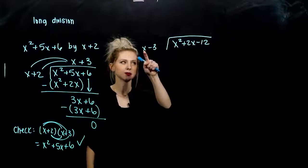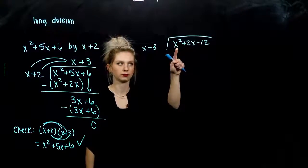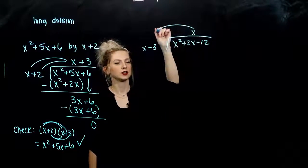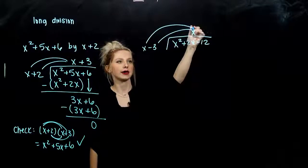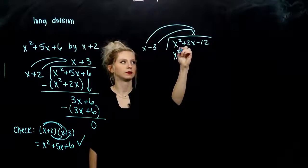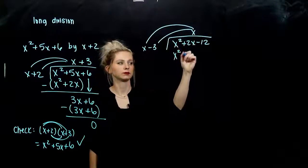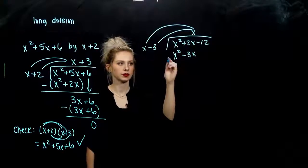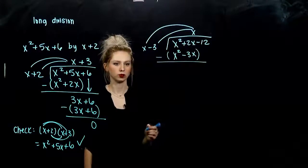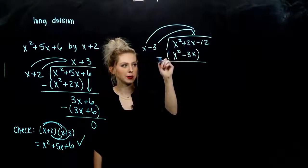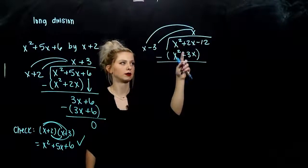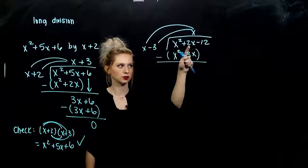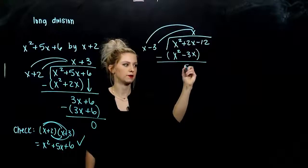We have to ask: what do I need to multiply x by to get me here? By a factor of x. We line up all of the same variables together, take that to each of these terms and write it below. So x times x gives me x squared, x times negative 3 gives me minus 3x. Lining up similar variables, and we're subtracting an entire quantity. x squared minus x squared is going to be gone, and I've got 2x minus negative 3x, so 2x plus 3x will give me 5x.